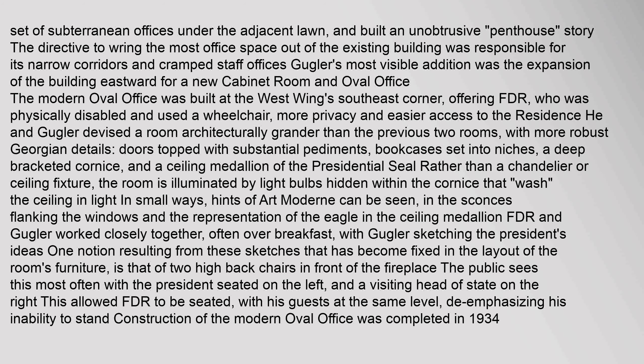He and Gugler devised a room architecturally grander than the previous two rooms, with more robust Georgian details, doors topped with substantial pediments, bookcases set into niches, a deep bracketed cornice, and a ceiling medallion of the presidential seal rather than a chandelier. The room is illuminated by light bulbs hidden within the cornice. FDR and Gugler worked closely together, often over breakfast, with Gugler sketching the president's ideas. One notion resulting from these sketches — two high-back chairs in front of the fireplace — has become fixed in the layout of the room's furniture, allowing FDR to be seated with his guests at the same level, de-emphasizing his inability to stand. Construction of the modern Oval Office was completed in 1934.